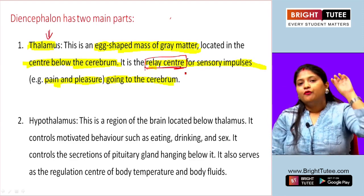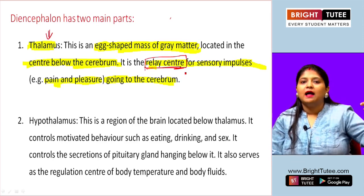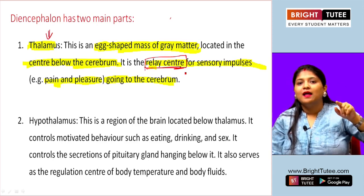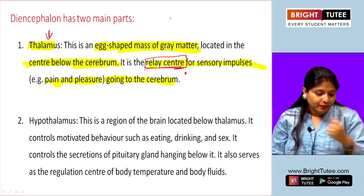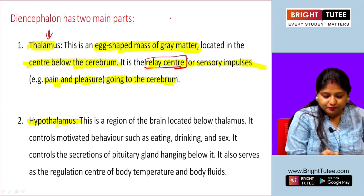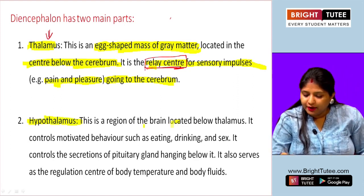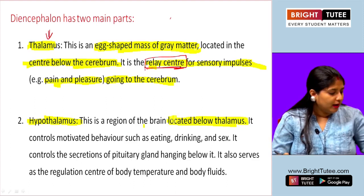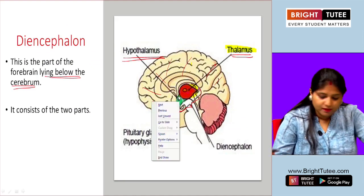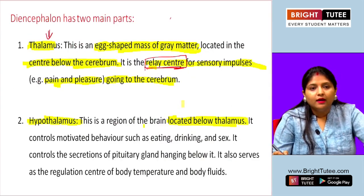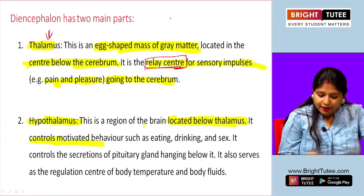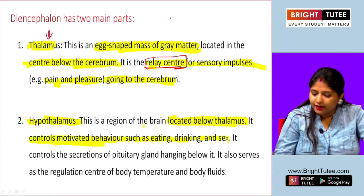The second part of the diencephalon is the hypothalamus, located below the thalamus. It controls motivated behaviour such as eating, drinking, and sex. Motivated behaviour means, for instance, even after a full meal if someone presents a chocolate cake you really like, you can still eat a piece or two — driven by motivation or preference. This kind of instinctive motivated behaviour is controlled by the hypothalamus.